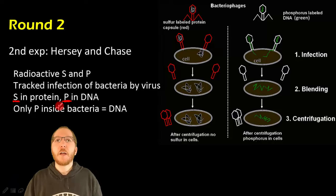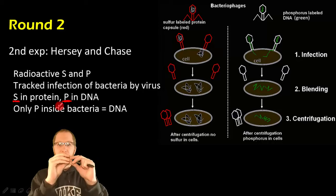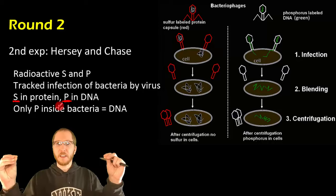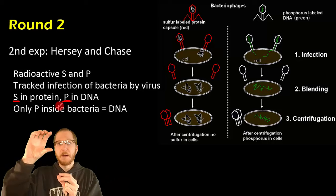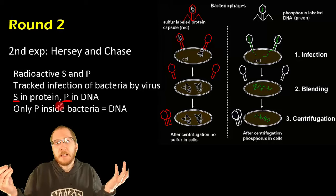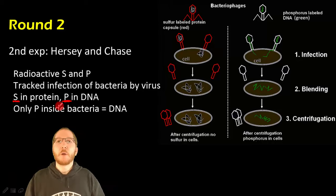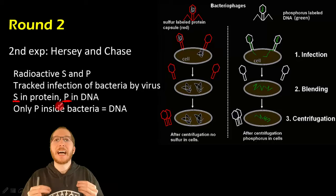They then allowed these viruses to infect bacteria. They centrifuged them — spinning really fast — to make the bacteria sink to the bottom as a pellet, with all the fluid above it. They were able to analyze where the radioactive material ended up: was it down in the pellet with the bacteria, or up in the fluid, meaning it never went inside the bacteria?